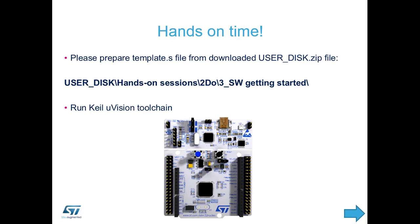Now we're going to start the hands-on. First, we need to go to our user disk software and extract it to our hard disk. This gives us the hands-on template for our session. We're going to find certain elements of code but use a template for the overall structure. We'll copy and paste most of the project — only writing three lines ourselves — then build and run using the Keil Microvision toolchain.